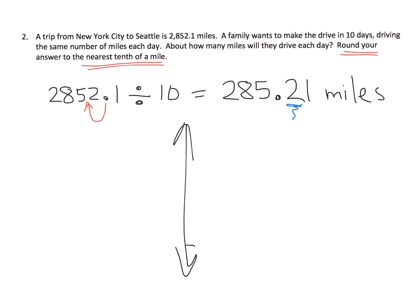So our vertical number line would go as low as 285.2 and as high as 285.3.